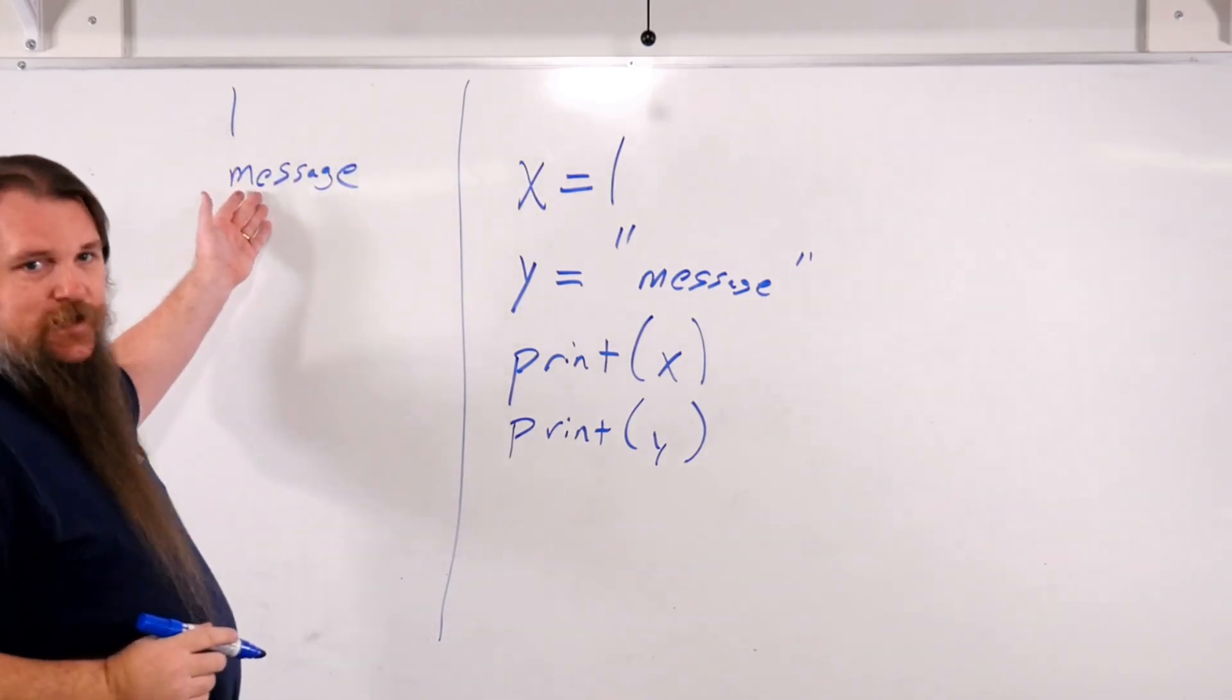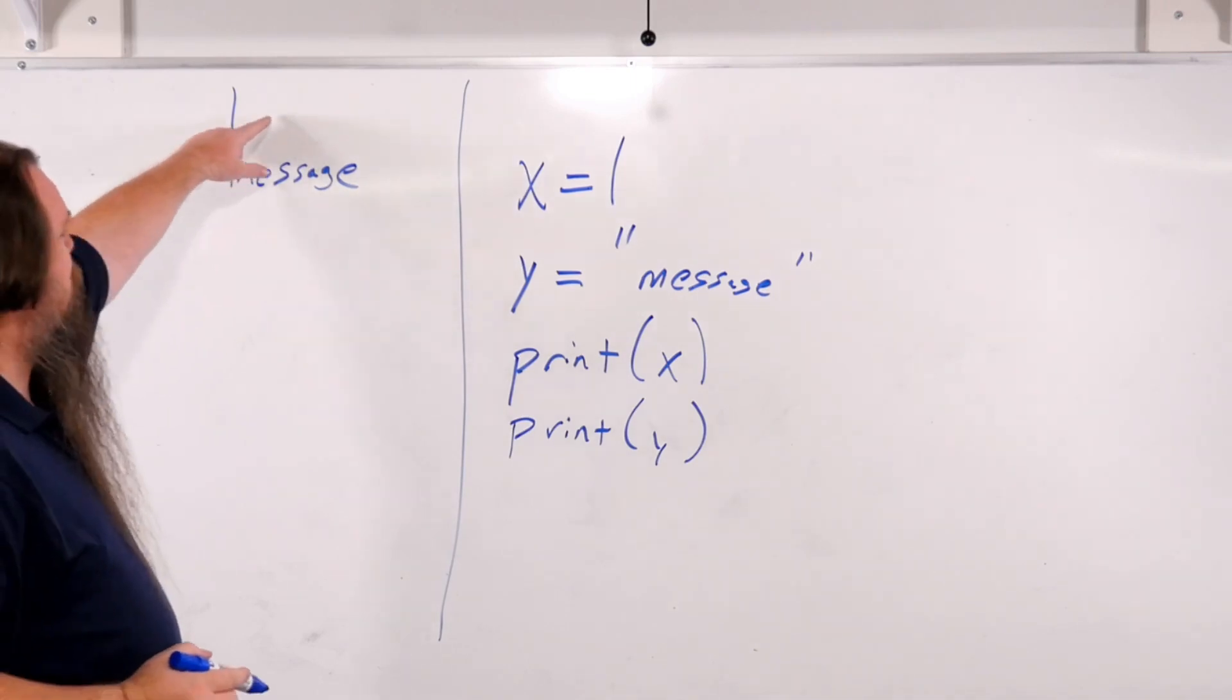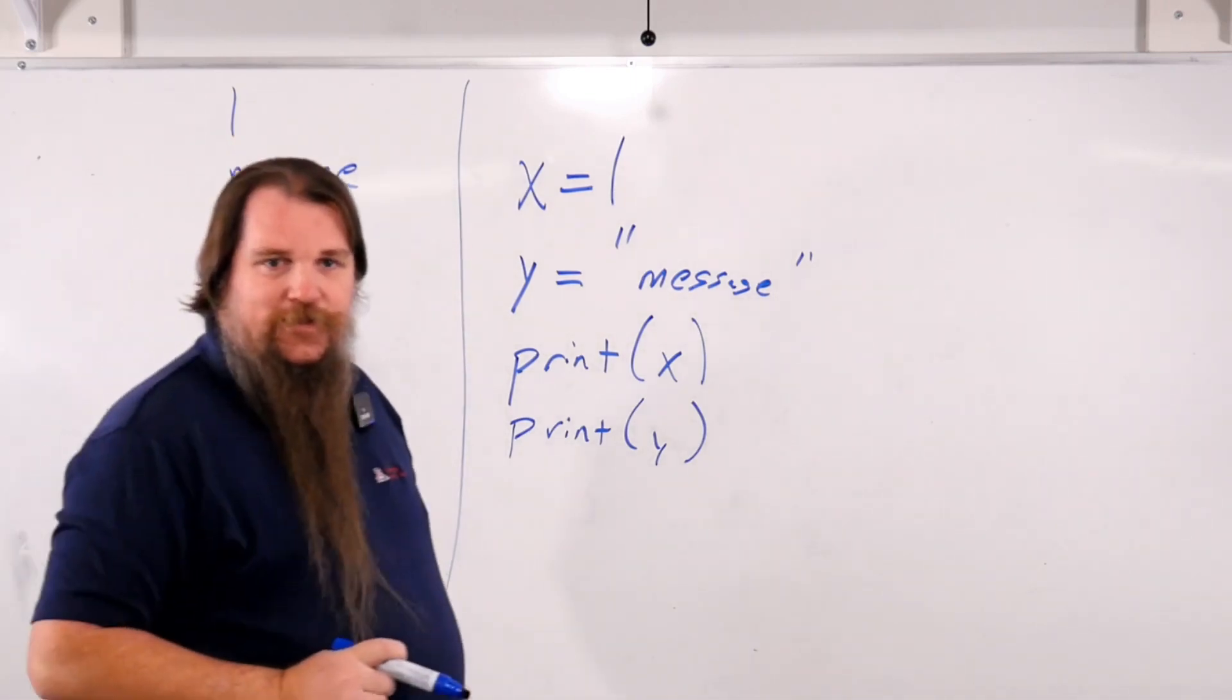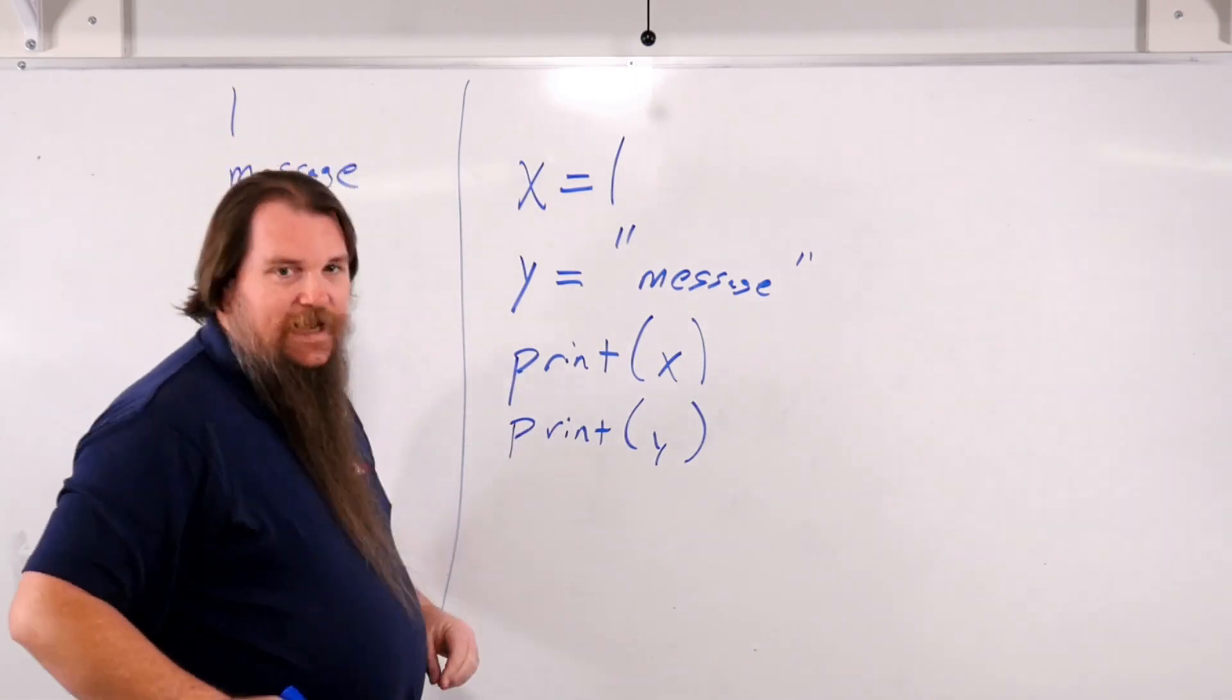If you're coming from C++ and Java, you'll notice that there's automatically a newline between these two, because print always adds one at the end.